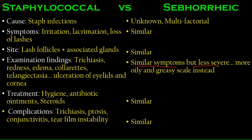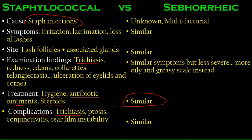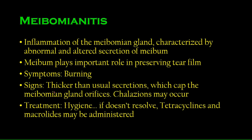In seborrheic blepharitis, symptoms are less severe and the discharge is more oily and greasy rather than dry. In staphylococcal blepharitis we find dry, flaky collarettes like breadcrumbs; in seborrheic it is scaly, greasy, and oily. Other seborrheic findings include inward bending of the eyelids, ptosis (drooping eyelids), conjunctivitis, and tear film instability where the tear film breaks down.